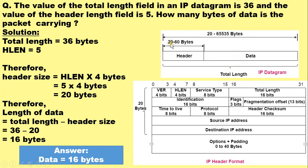The header varies from 20 bytes to 60 bytes and the data can be 65,535 bytes minus the size of this header. The total length is the header length plus the data length.